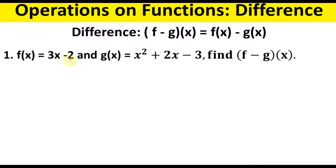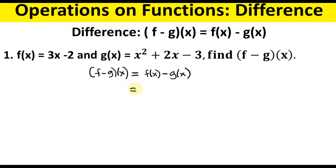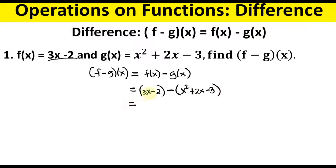Write the formula: (f minus g)(x) equals f of x subtract g of x. Substitute the value of f of x, which is 3x minus 2, then subtract the value of g of x, which is x squared plus 2x minus 3.